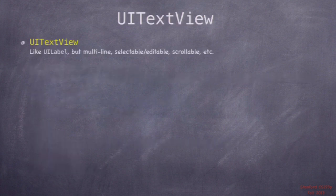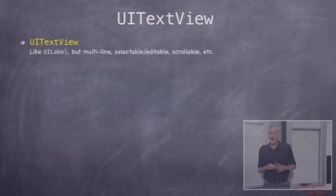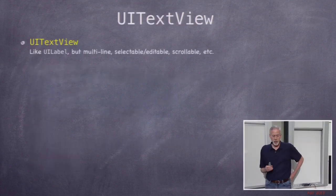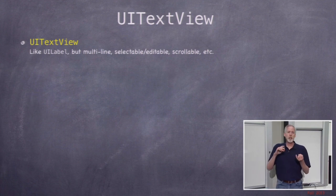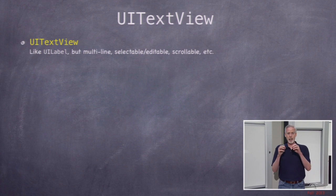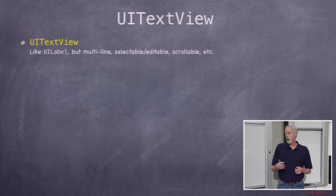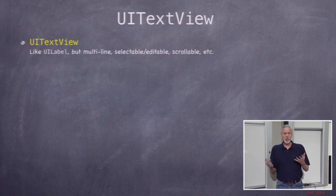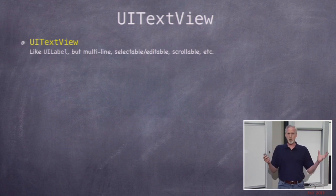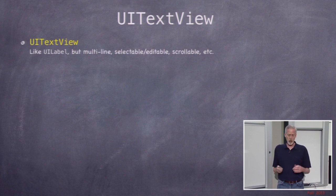Let's start with UITextView — like UILabel in that it displays text, but way more powerful because the text is multi-line. UILabel, if you want it to be multi-line, you kind of have to say how many lines it is in advance, whereas UITextView it's as many lines as it needs. It's also scrollable, editable, or just selectable if you want, and you get all the mutable attributed string setting of colors and other things.